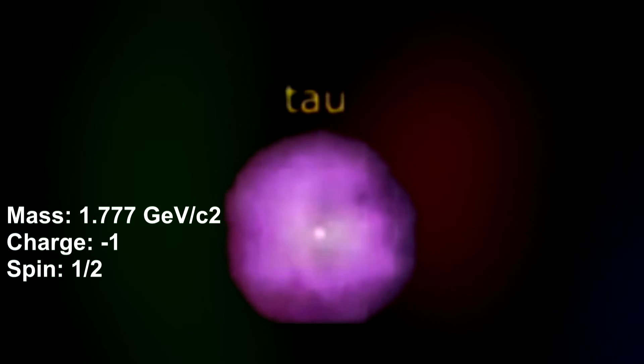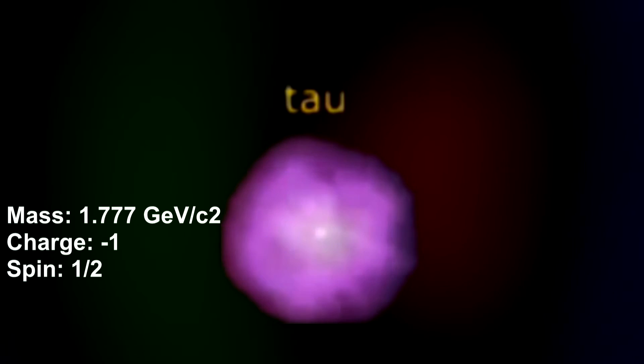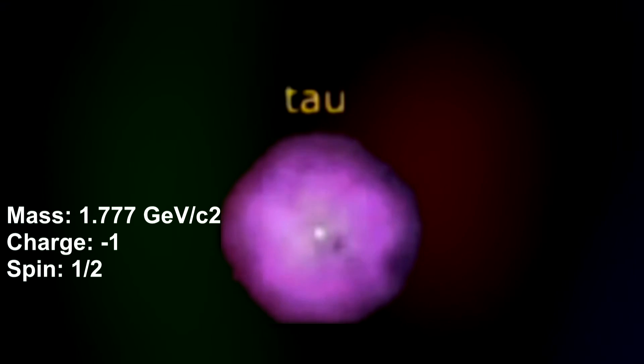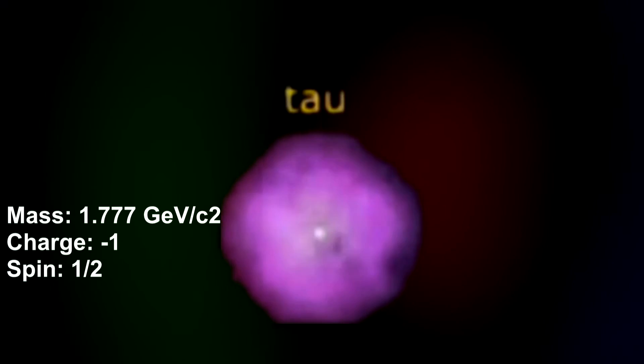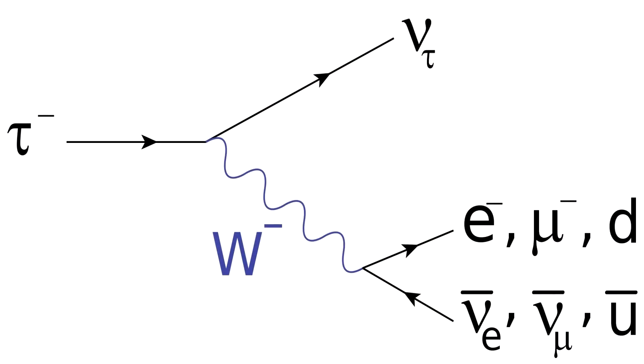On the contrary, the tau is even heavier, having a mass that is 3,490 times greater in comparison to the electron. The tau is also the only lepton that can decay into a quark. The other leptons are incapable of achieving this due to their infinitesimal mass.